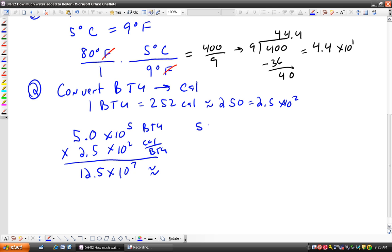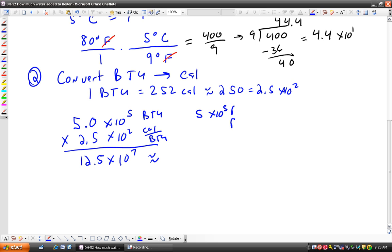Or if you'd have written it out the way I really like, 5 times 10 to the fifth BTU over one times every one BTU is 2.5 times 10 to the two calories. This is going to be approximately 1.3 times 10 to the eighth. So if I move this decimal over here and make this smaller, this has to get bigger. So that's going to be times 10 to the eighth calories.